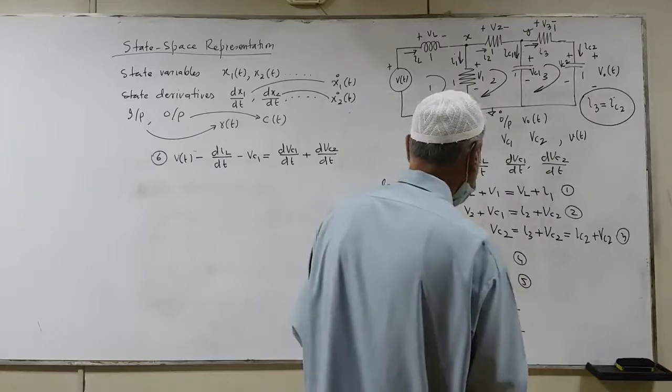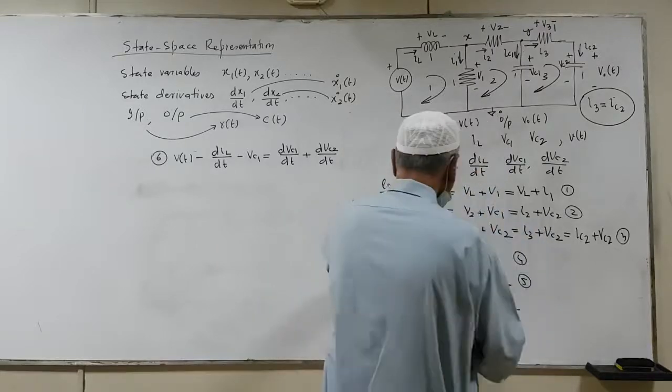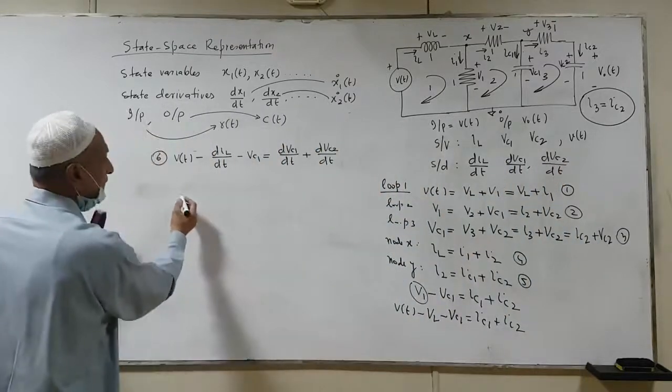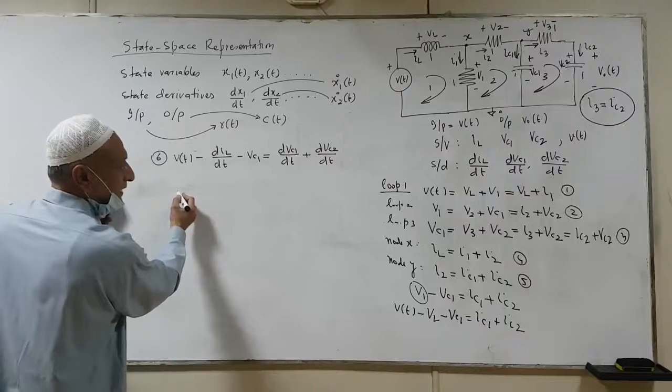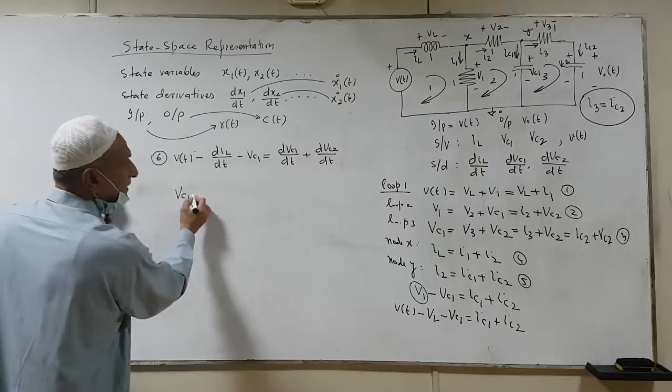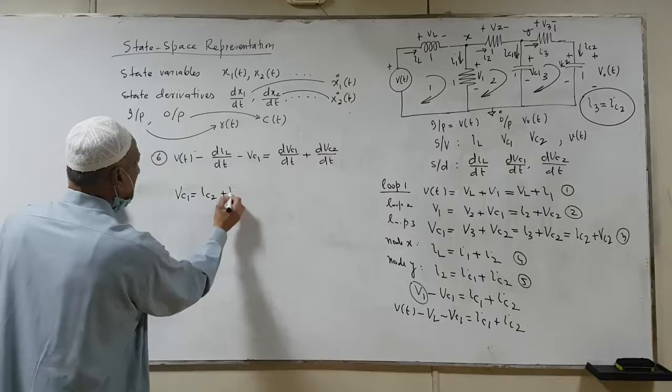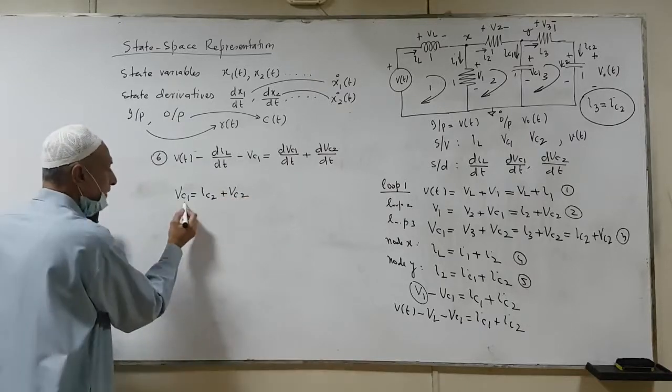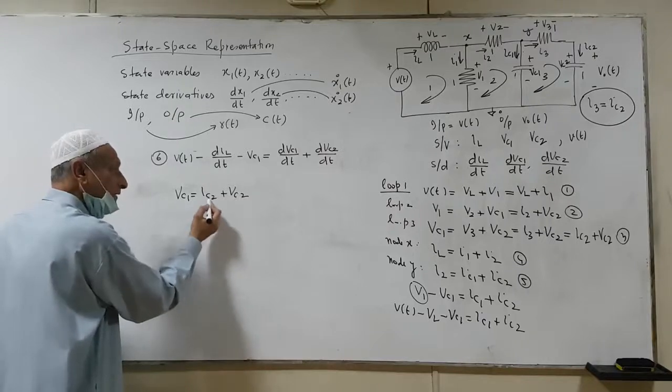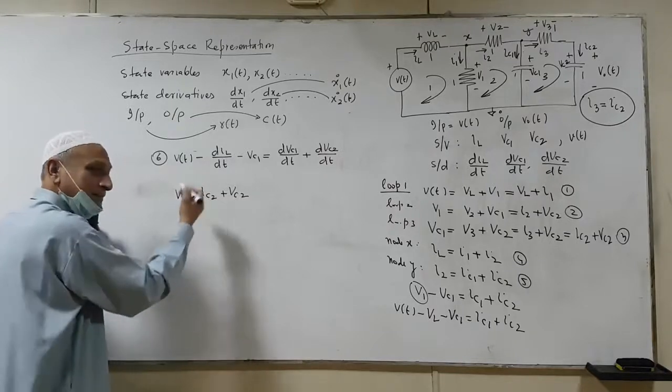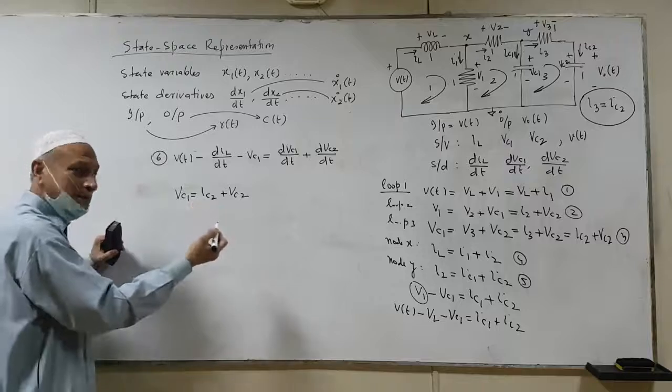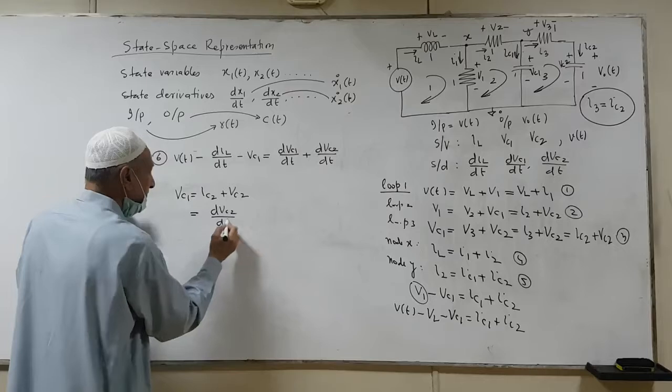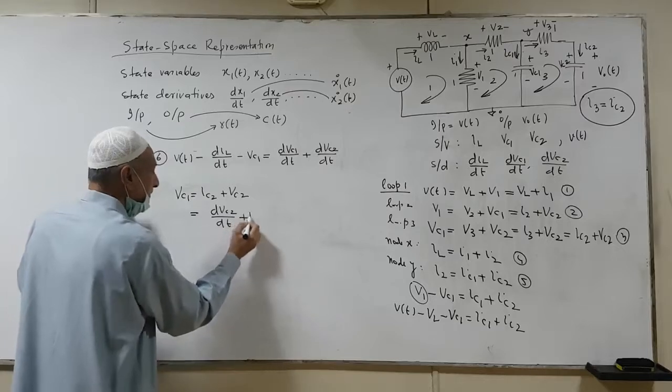Let's see what we can get over here. Something which is obvious is if you look at the loop equation 3. Loop equation 3 reminds us of something where we have Vc1 is equal to Ic2 plus Vc2. Now, Vc1 and Vc2 are the state variable whereas this actually causes to become a state derivative.